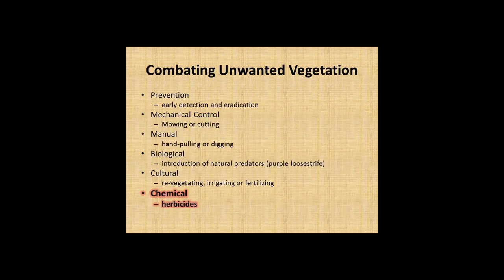When combating unwanted vegetation, there are several different ways to go about it. The easiest, which I talked about in my last talk, is prevention — scouting your forest, knowing what's there. When you start to see invasives, and before you consider using chemicals, if you find it early enough you can just pull it. Mechanical control is another option — you can mow or cut the species. That kind of decimates the seed bank. You can set things back by mowing or cutting them.